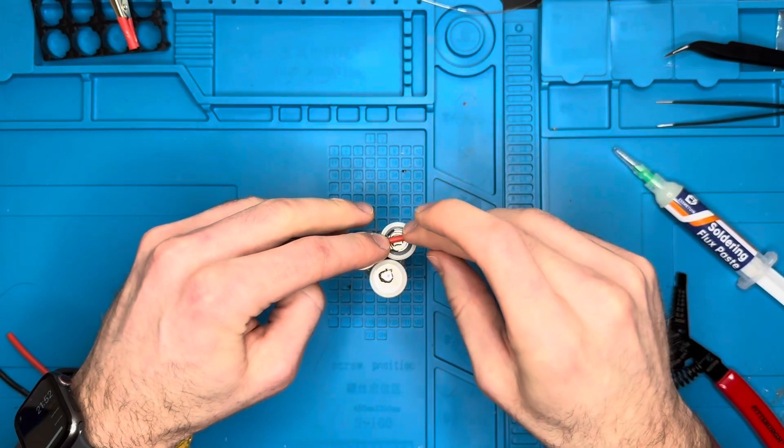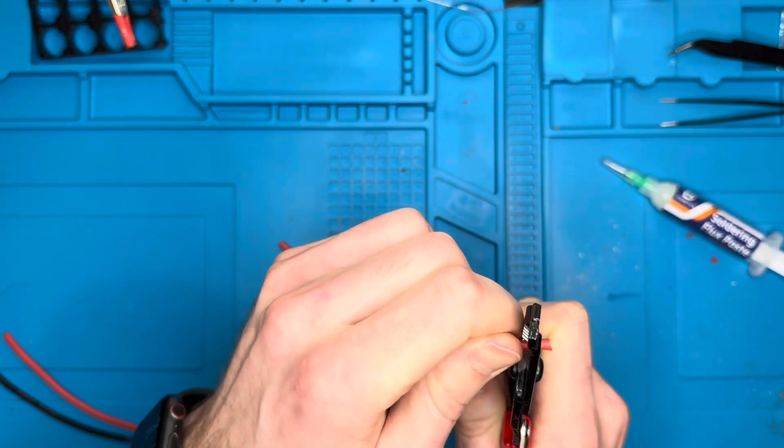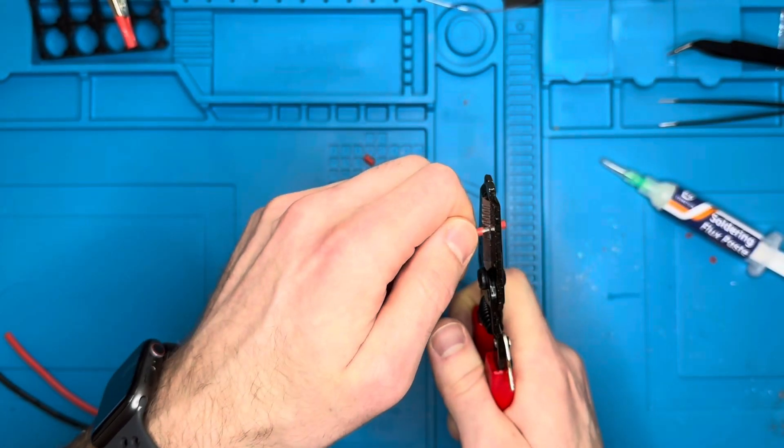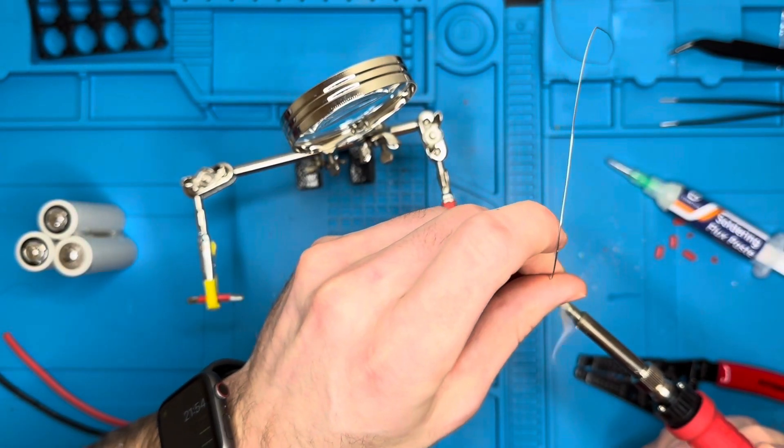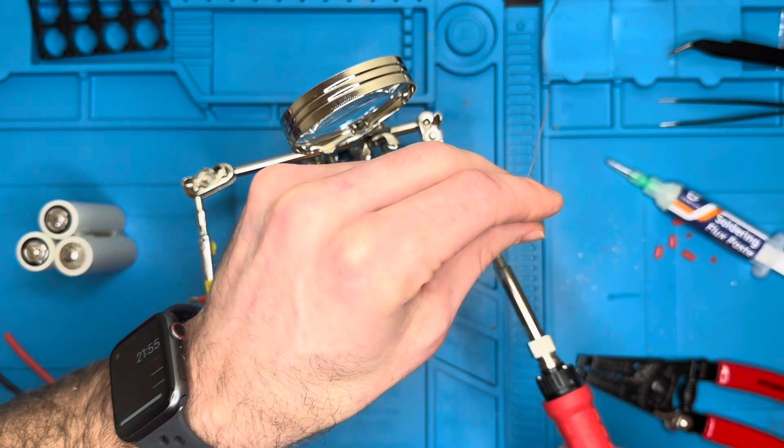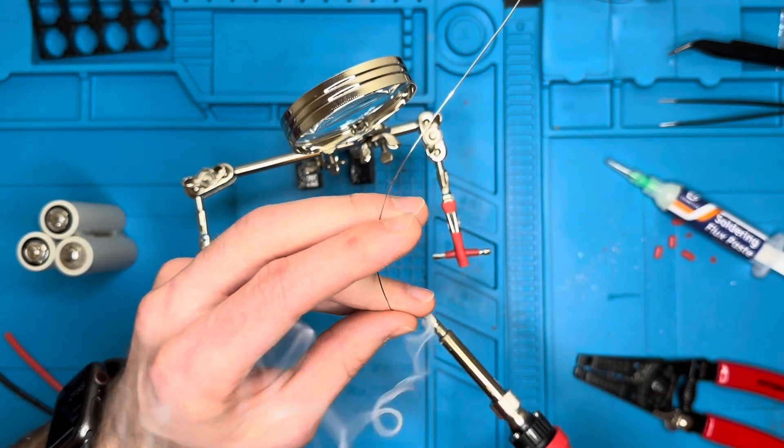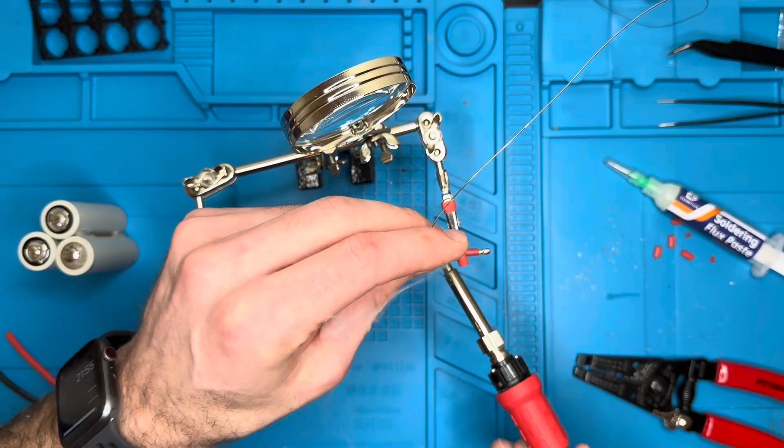Now I'm going to go ahead and grab the pre-cut 14 gauge wire, strip the ends off, and tin them. It helps a ton having these helping hands here. That was $5 from Harbor Freight. And I like to glob the solder on there good. That way, when you go to connect, you don't have to add more solder.